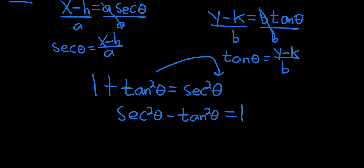And now this is where the magic happens. You see, because secant of theta is x minus h over a, this becomes x minus h over a, and the whole thing is squared.